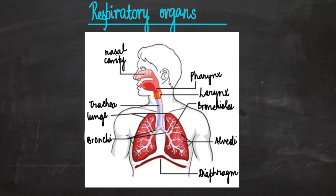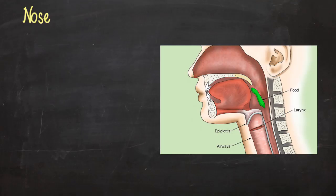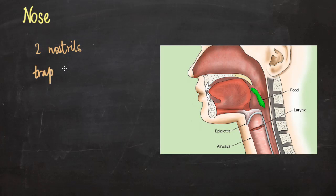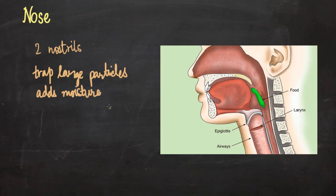Now let's look at each respiratory organ in greater detail. At the beginning of the air passage we have the nose, which has two nostrils from which air can enter. In the inner lining of the nasal chamber there are hairs which trap large particles from entering into the body. It also adds some moisture to the air.